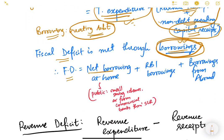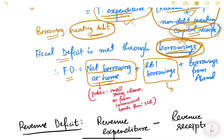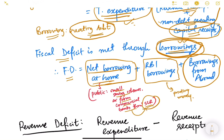Fiscal deficit is net borrowing at home — whatever you are borrowing from the domestic economy — plus whatever you are borrowing from the RBI, which is essentially printing of money, plus borrowing from abroad from foreign countries or foreign institutions. Borrowing at home includes small savings schemes or from commercial banks through SLR, where banks invest in government securities and thereby give loans to the government. Fiscal deficit should equal the sum of all these three channels.